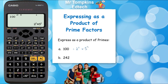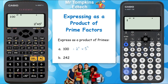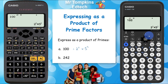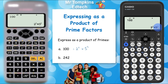On the new Casio calculator, start the same way by typing in 100 and pressing execute. Then press the format key and go down to where it says prime factor and press OK. You can see it gives the same answer of 2 squared times 5 squared.